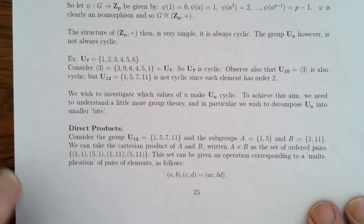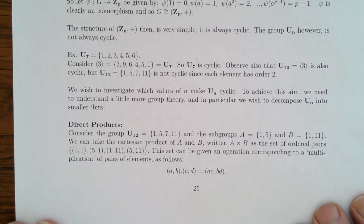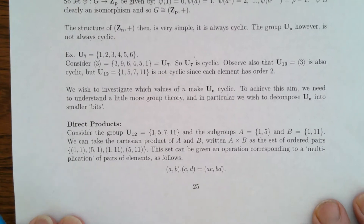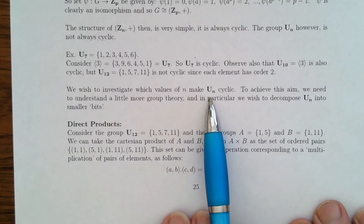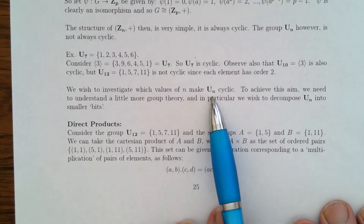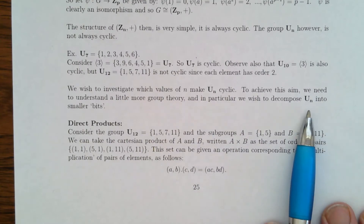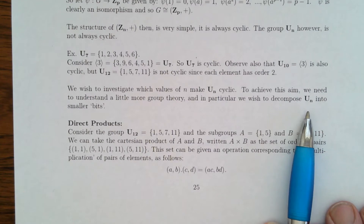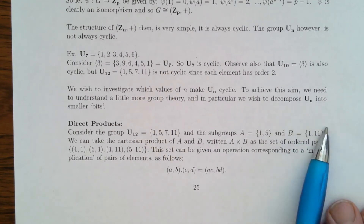Welcome again to our journey into algebra and number theory. We finished off in the last video by asking the question: when is this U_n group going to be cyclic? The way we're going to answer this eventually is we need to know a little more about group theory — in particular, we want to decompose U_n into smaller bits and then glue those smaller bits back together to get U_n.